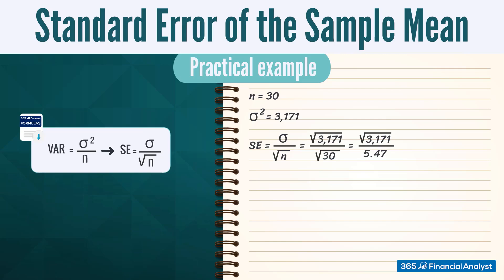Given that we already have its variance, we can simply take the square root of 3,171 and divide by 5.47 because we extracted 30 samples and the square root of 30 is approximately 5.47. So, we obtain a standard error of 10.3.